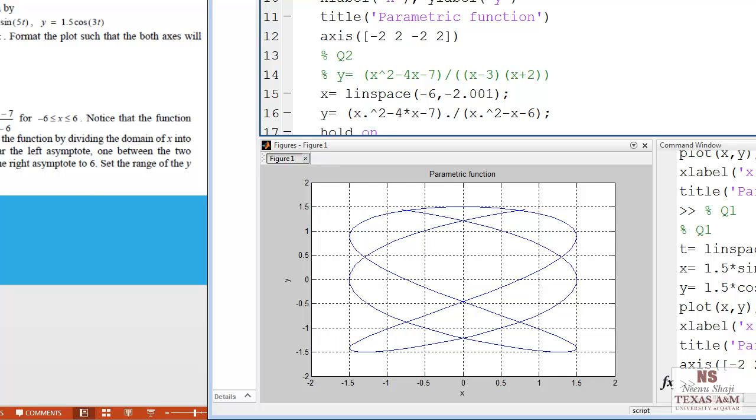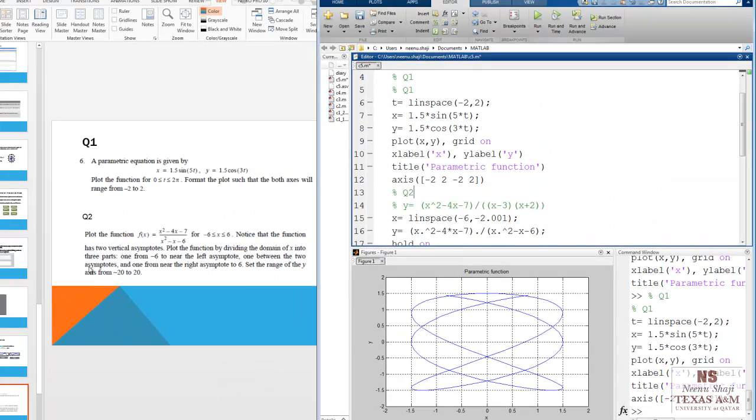We will move on to question number 2. Plot the function. f of x is a rational function where x is between negative 6 and 6. Notice that the function has two vertical asymptotes. So we can see from here, the vertical asymptote is at x equal 3 and at x equal negative 2. Plot the function by dividing the domain of x into three parts. One for negative 6 to near the left asymptote. One between the two asymptotes. And one from near the right asymptote to 6. Set the range of y axis from negative 20 to 20.